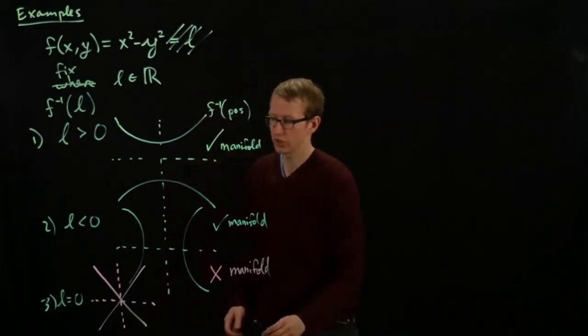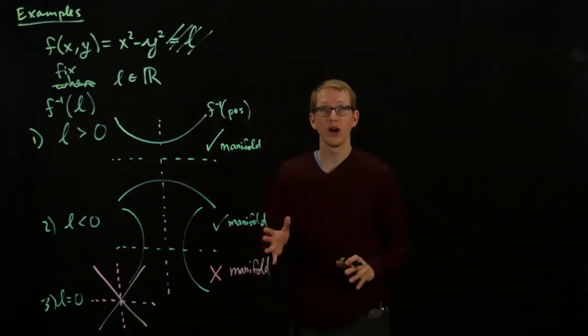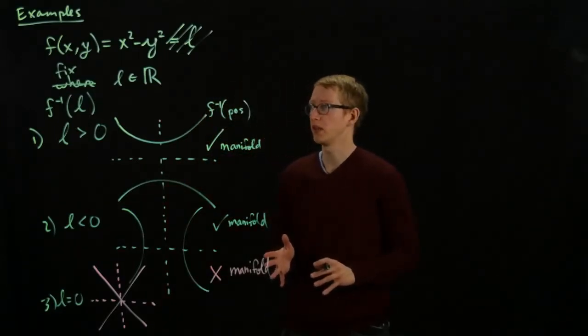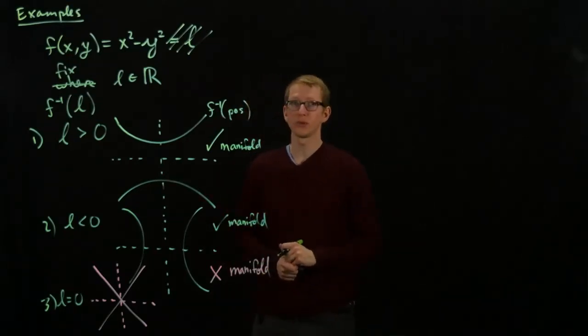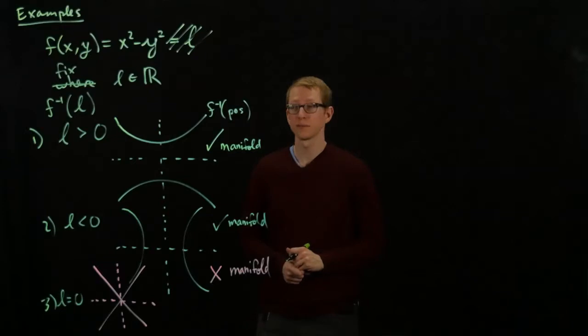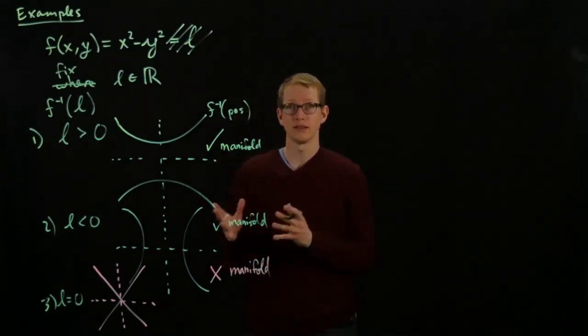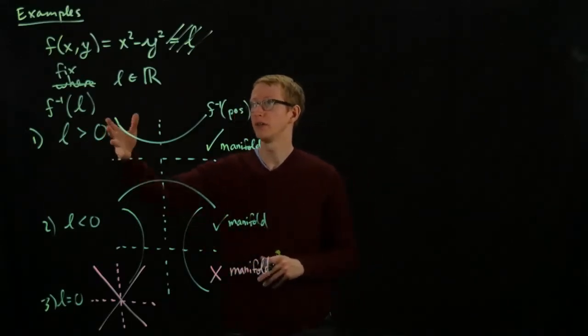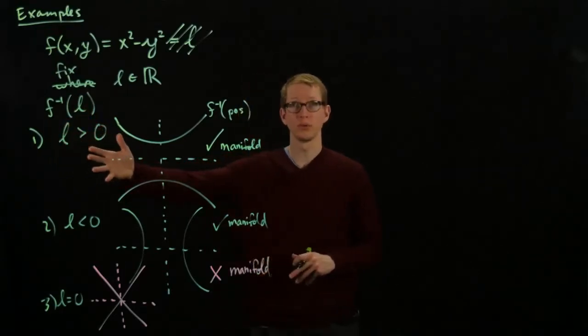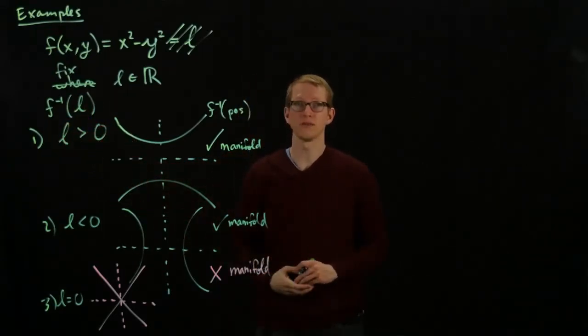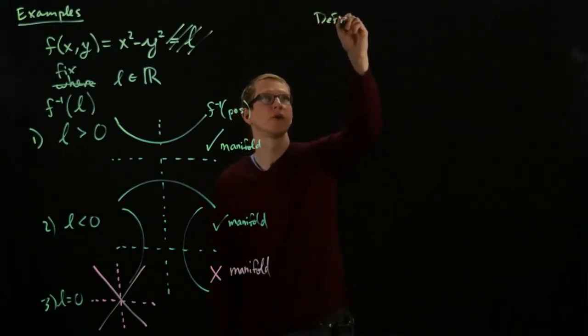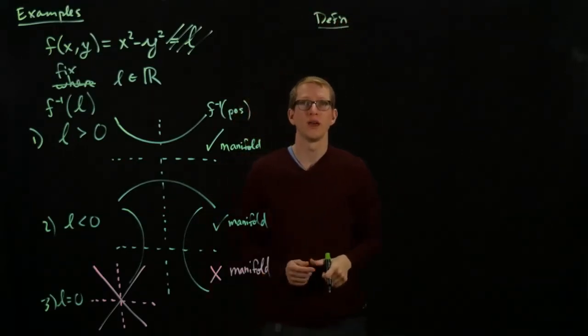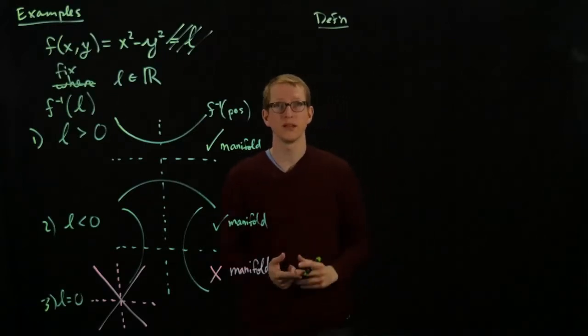So level sets of functions very often give us manifolds. In fact, most of the time. And later we'll say exactly what we mean by most, but for now let's just study when the inverse image of an element under a certain suitable differentiable function gives a manifold. So for this, we'll need to define the notion of regular points, critical points, and regular values.